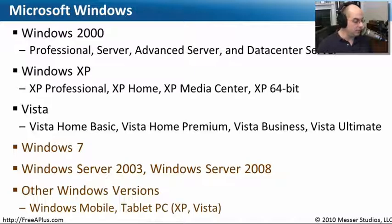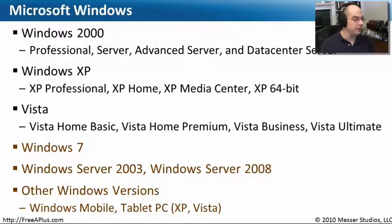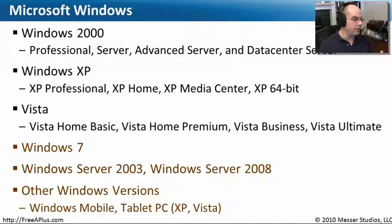And lastly, there are many other Windows versions — Windows Mobile and tablet PCs — that are really different flavors of XP, Vista, and Windows 7. We won't be talking about any of those in our CompTIA A+ certification training videos, and they are not part of the A+ requirements. But they're still out there, so don't be surprised if you see Windows in some very unusual places. We're going to focus our efforts on Windows 2000, Windows XP, and Windows Vista.